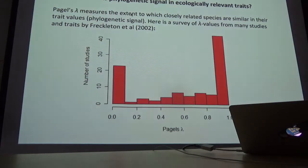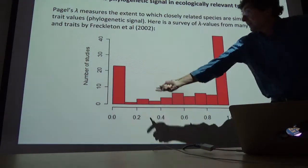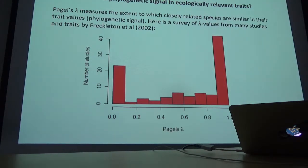Freckleton et al. did a survey of data in the published literature and used a measure called Pagel's Lambda to quantify phylogenetic signal in trees and traits. Pagel's Lambda is close to one if there is strong phylogenetic signal — closely related species tend to be more similar in their trait values — whereas it's low if phylogenetic signal is low. The graph shows that most examples have at least some phylogenetic signal, and the most frequent value is very high phylogenetic signal. So it does seem to be an issue in real traits and real phylogenies in nature.